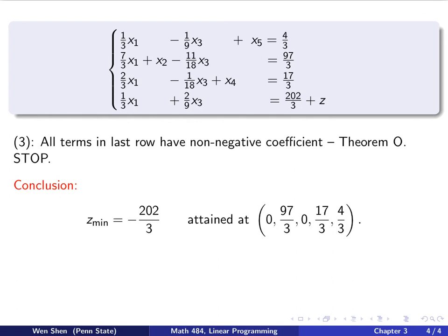So we can give the conclusion, the answer. So the minimum of z would be the negative of this, so be careful, there's a negative here, 202 over 3, and this value is attained at the basic solution here. That is x1, x3 is 0, and x2, x4, x5 are the corresponding right-hand side. So this is x2, that's x4, and that's x5. So that's the first example we have using the algorithm that we summarized.